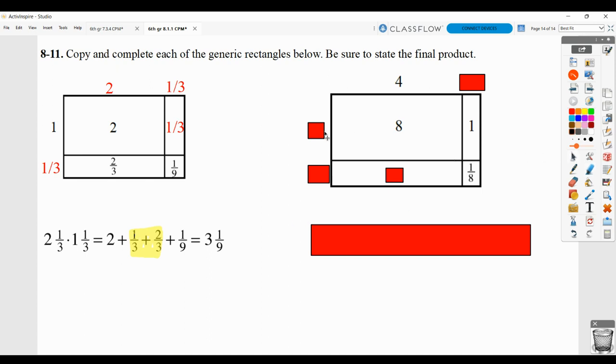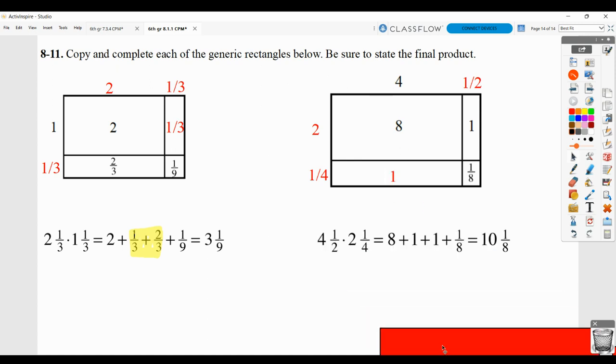Here you would say to yourself, what times 4 equals 8? And that would be 2. 2 times what equals 1? That would be 1 half. Here we have 1 half times what equaling 1 eighth? That would be 1 fourth. And 1 fourth times 4 is 1. So all that information, and check your answer.